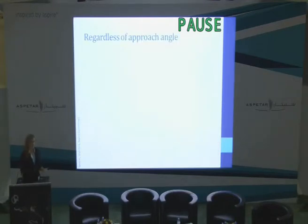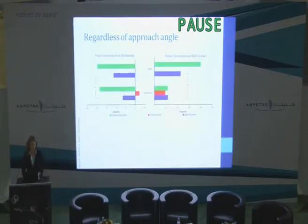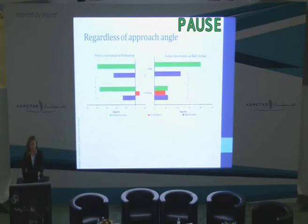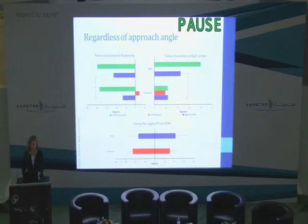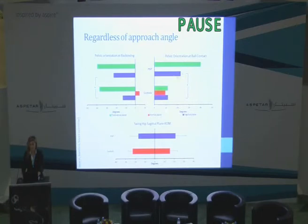What did we find? Regardless of approach angle, looking at pelvic orientation, the significantly different variables were in the sagittal plane at backswing and at ball contact. From now on I'll refer to the previously groin pain group as the PGP group. Combined with swing hip sagittal plane range of motion, at backswing the PGP group utilized more anterior pelvic tilt combined with less hip extension. At ball contact, they showed more posterior pelvic tilt combined with more hip flexion. It's almost like they're reluctant to open up that hip joint — keeping it closed a little bit longer.